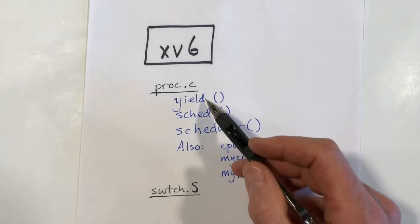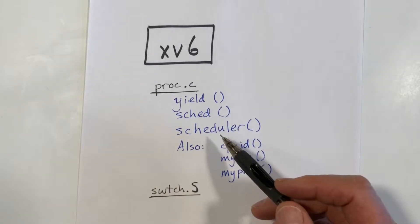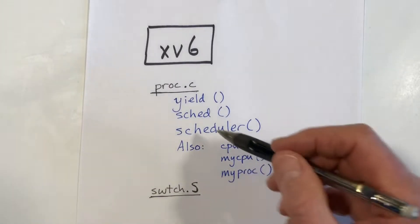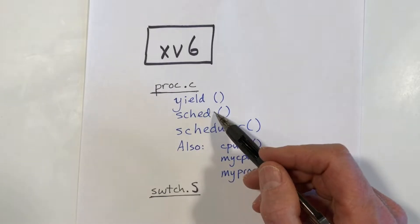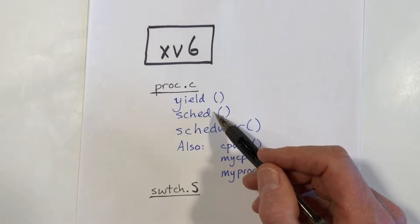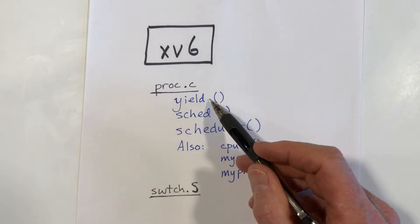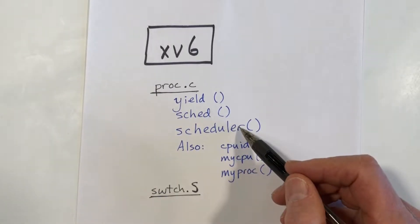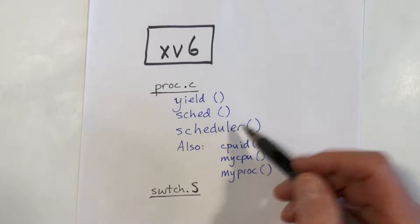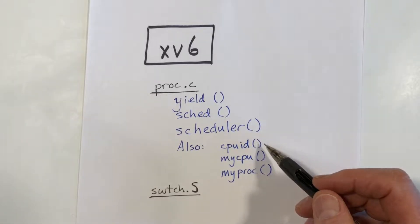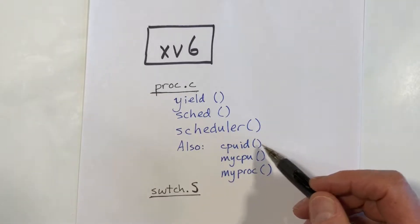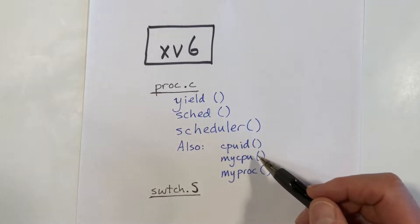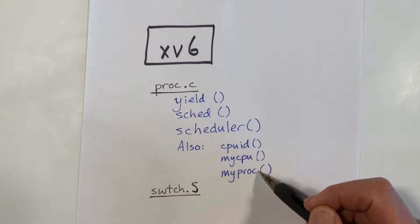I will look at these three functions. I'll pronounce this one SCED. So I'll look at functions YIELD, SCED, and Scheduler. And I'll also look at some helper functions: CPUID, MyCPU, and MyPROC.